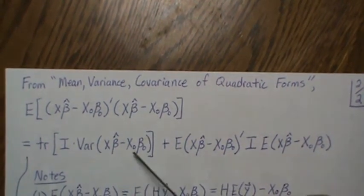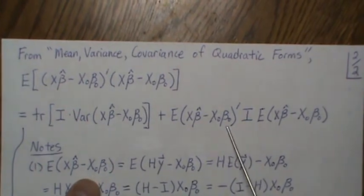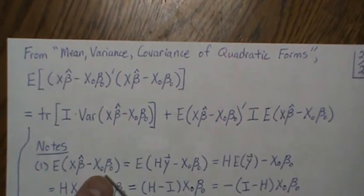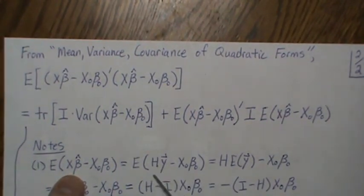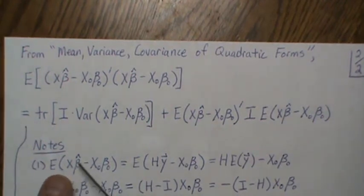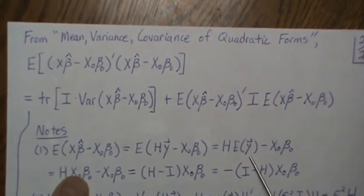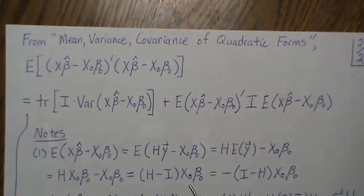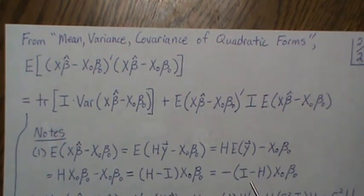Let's find the mean of this vector. x naught beta naught is a constant, and x beta hat is the hat matrix H times y. The least squares estimate beta hat equals (X'X)^{-1} X'y, so all the x's out front form the hat matrix. Taking the expected value, E[y] equals the true model x naught beta naught. Factoring out x naught beta naught and rearranging, we get that the mean involves the symmetric idempotent matrix (I - H), which is the perpendicular projection onto the orthogonal complement of the column space of X.